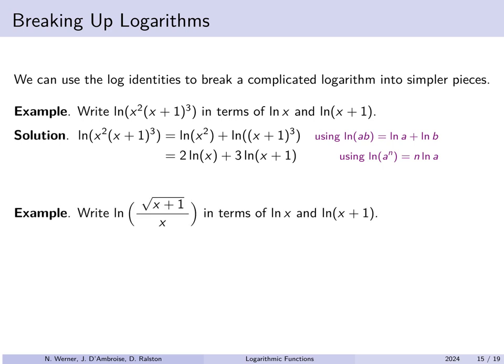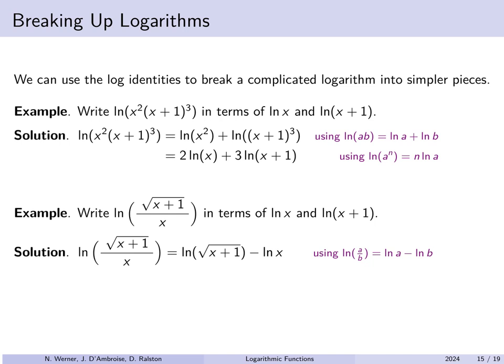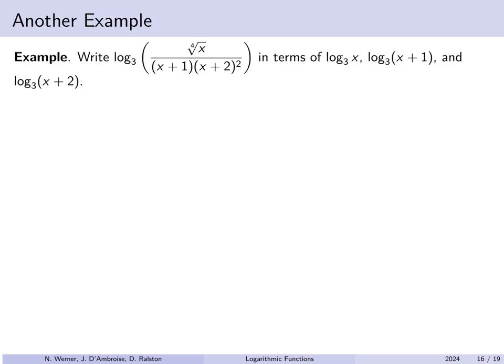Another example: write the natural log of root(x+1) over x in terms of natural log of x and natural log of (x+1). First, the quotient rule gives the natural log of root(x+1) minus the natural log of x. Then rewrite root(x+1) as (x+1) to the 1/2, so the power 1/2 can come out as a factor, giving 1/2 times the natural log of (x+1) minus the natural log of x. Another example: write log base 3 of the fourth root of x over the product (x+1)(x+2) squared in terms of log base 3 of x, log base 3 of (x+1), and log base 3 of (x+2).